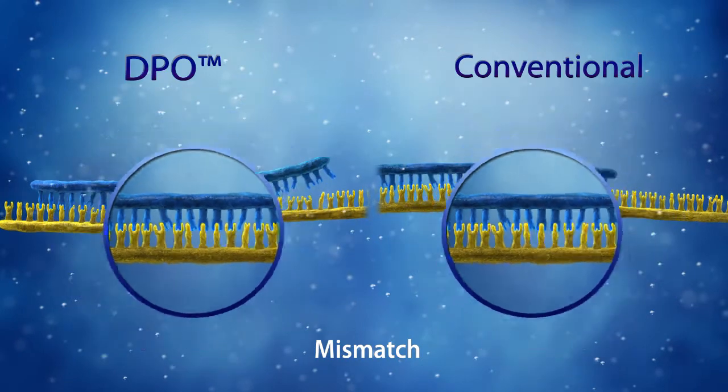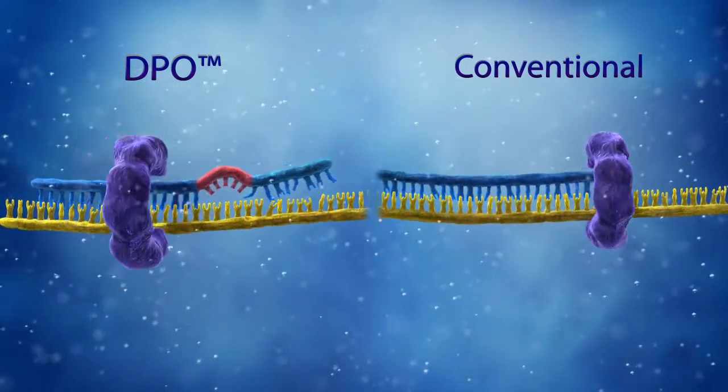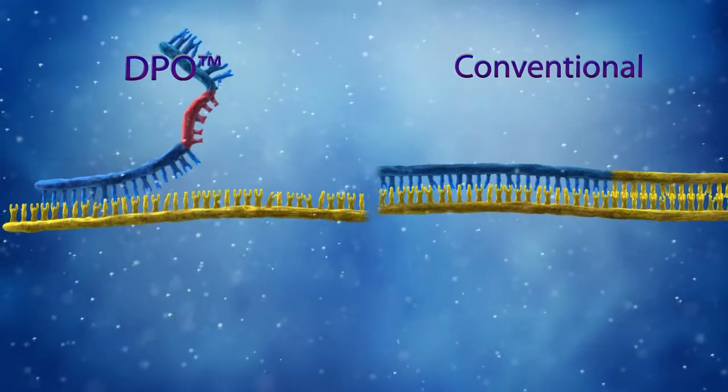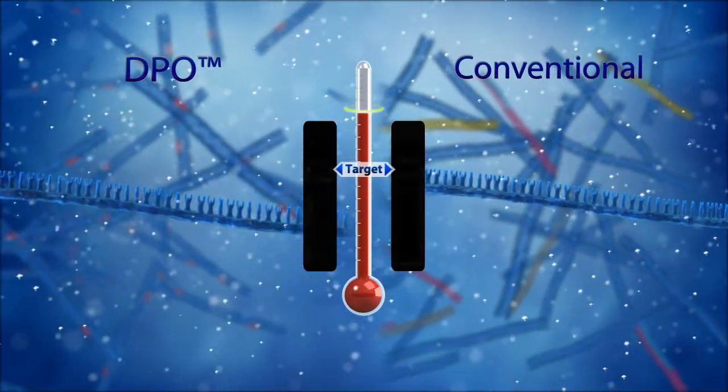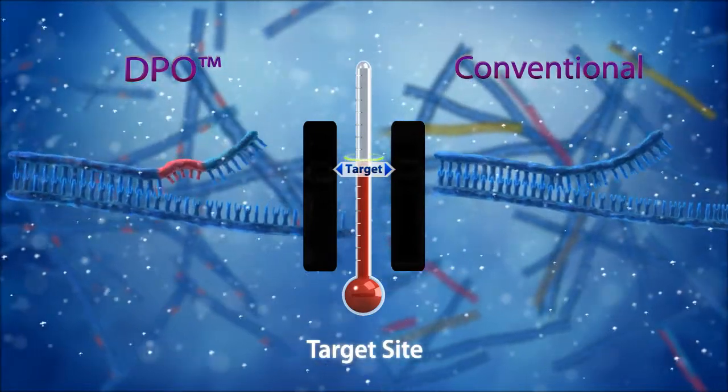In contrast, a conventional primer doesn't have a three prime portion that provides discrimination, such as in a DPO primer. This prevents non-specific priming and amplification. Therefore, when a conventional primer binds to a non-target sequence, amplification of the non-target DNA will occur.